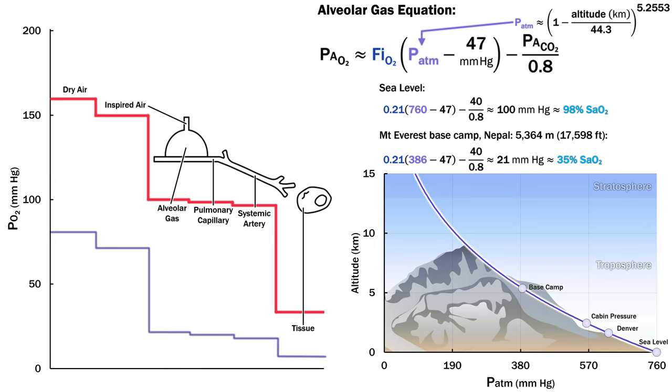Next we'll jump to over 5 kilometers of altitude to Mount Everest Base Camp in Nepal. Atmospheric pressure is half of that at sea level, and if we look at the alveolar gas equation, we have a PO2 of 21, which would be an oxygen saturation of 35%. Well, that's a problem. How does that work?